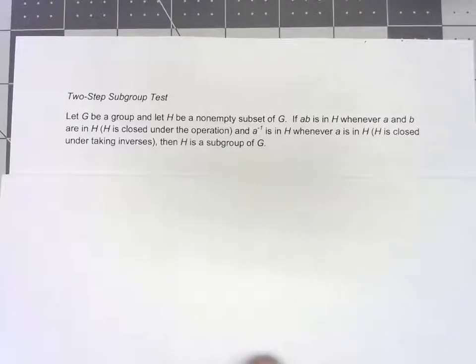So far, when we've been looking at subgroups, we've had to go through and verify all the important properties of a group. There's nothing wrong with that, however, we'd really like to be able to shortcut the process. The less work we have to do, obviously the better. There are a couple of different tests for this, and in particular, the one that I usually find the most useful is this thing called the two-step subgroup test.